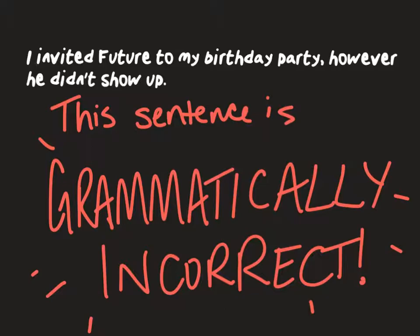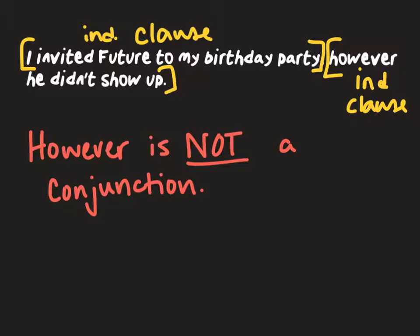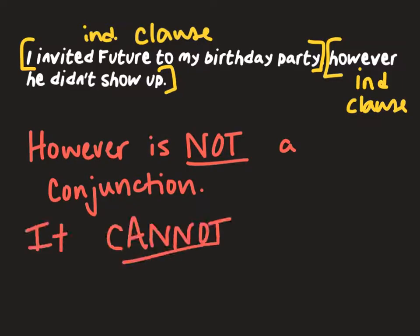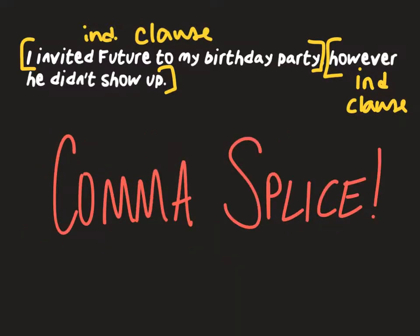'I invited Future to my birthday party' is a complete independent clause that can stand by itself. 'However he didn't show up' is also a complete sentence that can stand by itself. However is not a coordinating conjunction — it cannot go between two sentences to connect them. That makes this a comma splice and a run-on sentence.